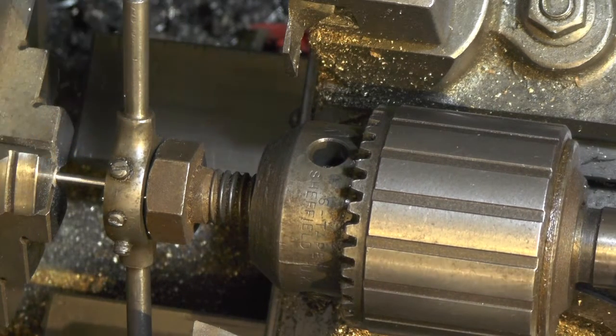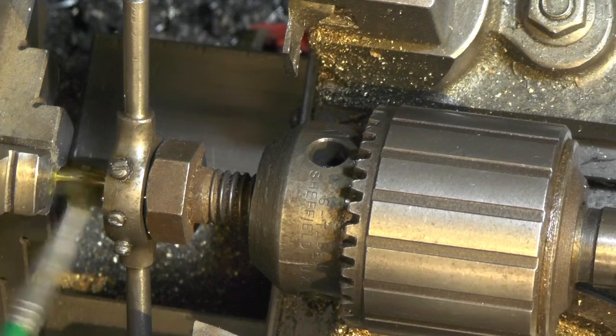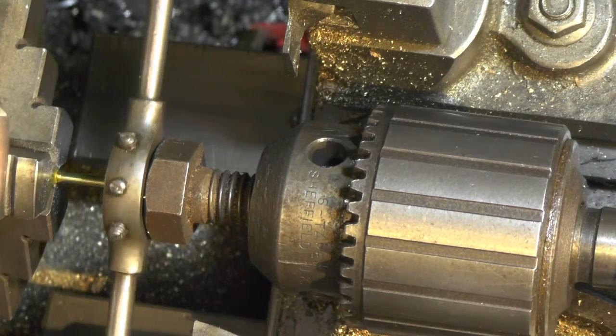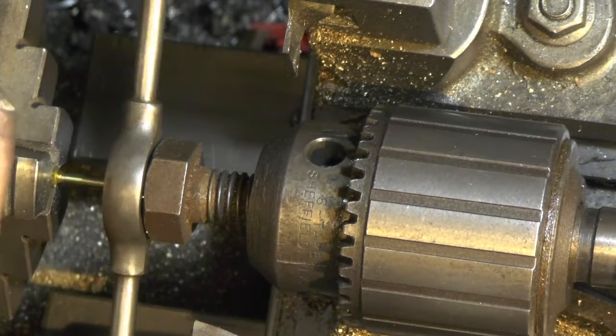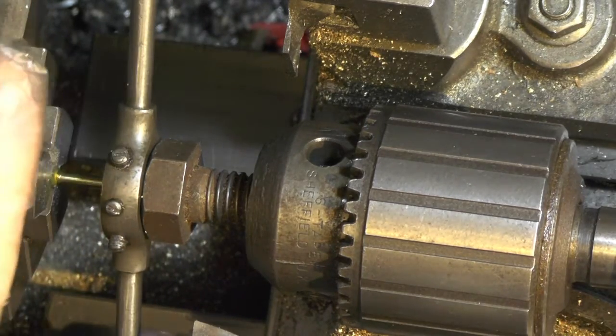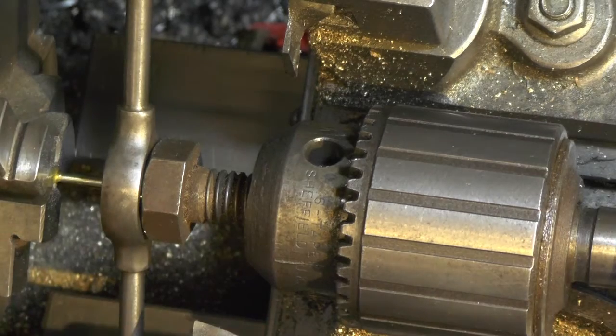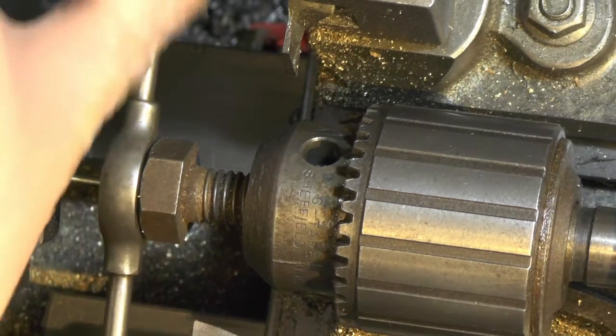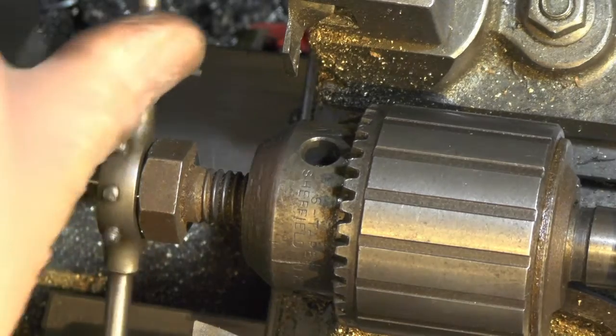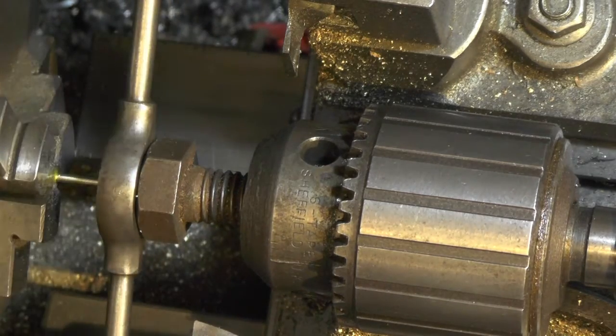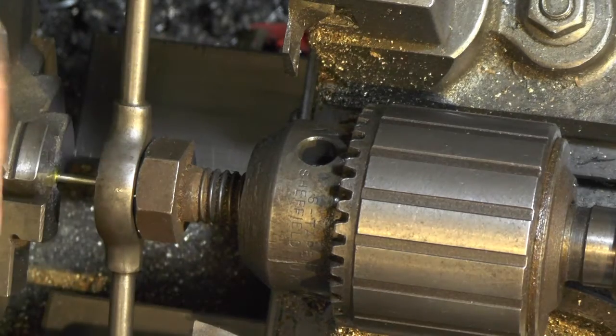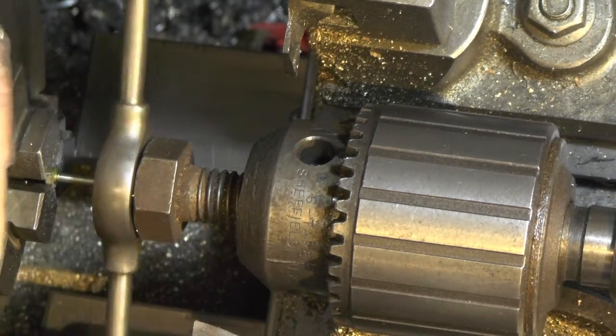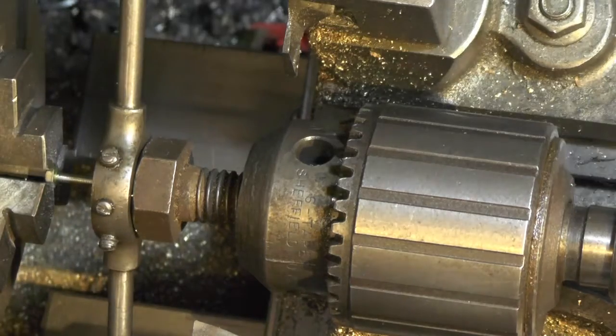Put a bit of cutting compound on, and then just follow up with the tailstock just to keep that die holder square, just to get your thread started a few turns. And then once you've got it started and you know it's square, you can remove the tailstock.